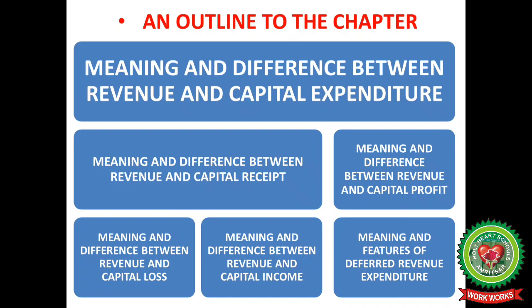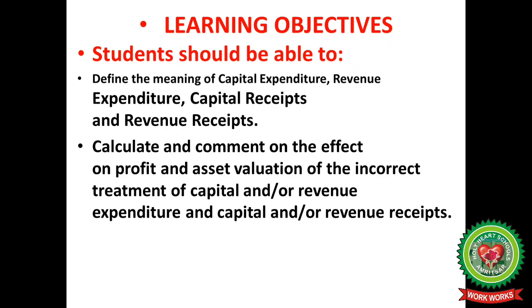Continuing the same chapter, we have already covered the meaning and difference between revenue and capital expenditure, and the meaning and difference between revenue and capital receipts. In this session we will cover capital and revenue profits with their difference, capital and revenue losses with a difference, capital and revenue income with a difference, and the last topic — deferred revenue expenditure. After attending this session, students should be able to define and calculate the effect on profit and asset valuation of the incorrect treatment of capital or revenue expenditure and receipts.